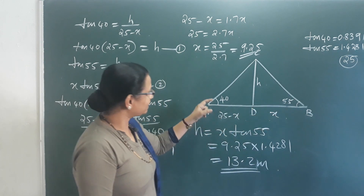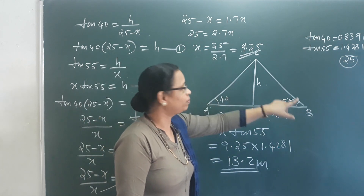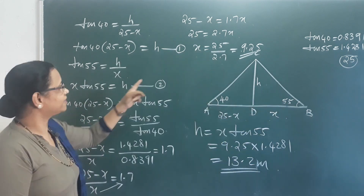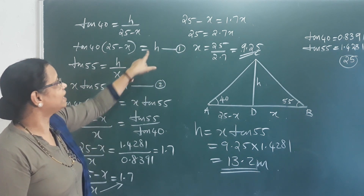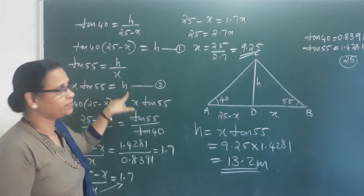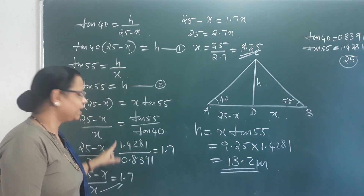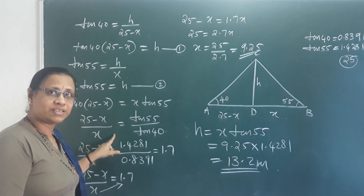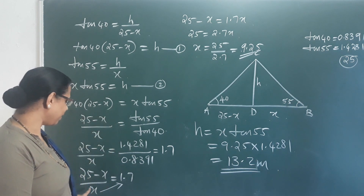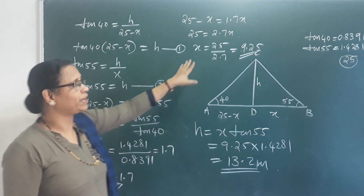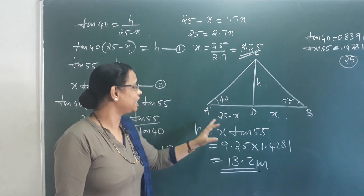We have to find tan 55. The other equation is equal to zero. Then we combine the two equations, find X, substitute the value, and find the electric post height.